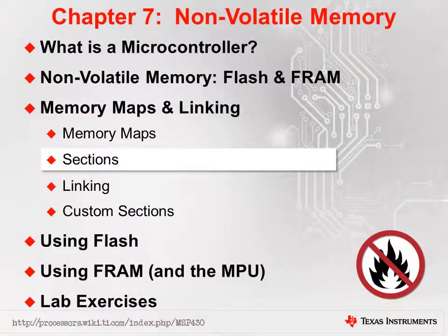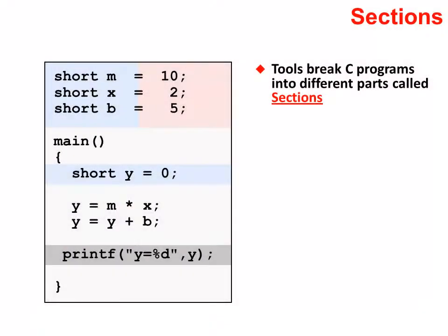What are code sections? To understand sections, let's start by looking at a short, simple C program. Notice how the different parts of the program are color coded differently. The global and static variables, shown in blue, need to be stored in volatile RAM-like memory, whereas the code and C initialization values, shown in gray and pink respectively, need to be stored in ROM-like non-volatile memory. Note that standard IO routines require sizable RAM-like buffers.